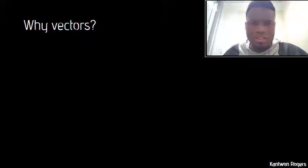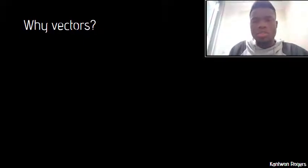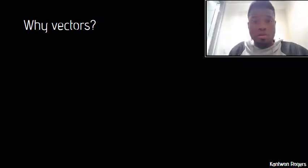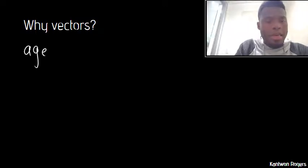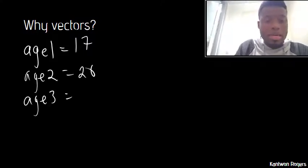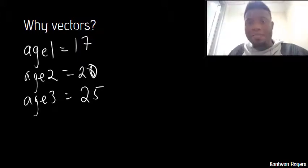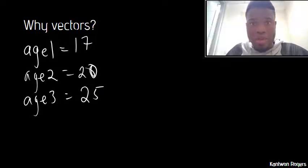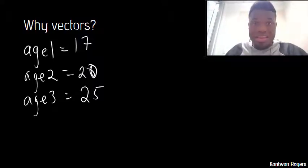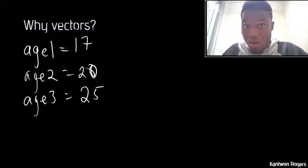So why do we like vectors? Let's work through an example. Let's say I wanted to store a whole bunch of people's ages. Right now I would have to have a variable for each person's age — age1 is 17, age2 is 20, age3 is 25. For every age I have to have a separate variable. What happens if I have a thousand ages, 10,000, or a million? I would have to create all of those variables — there's no way to do that easily. That's where vectors come into play.